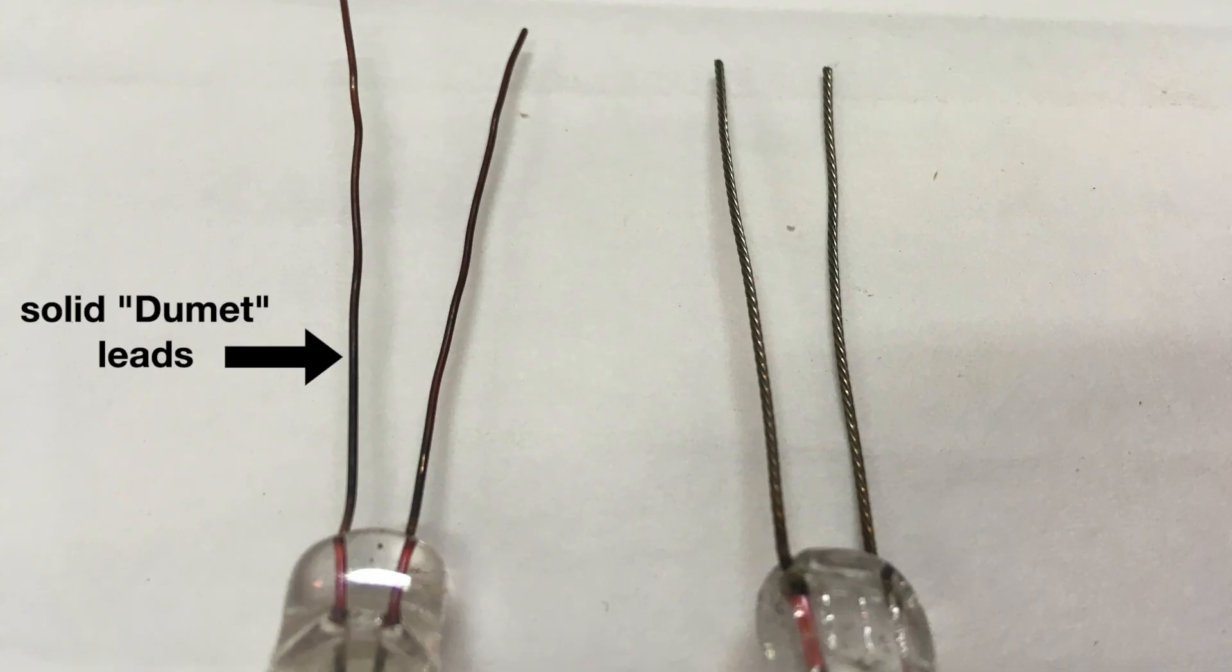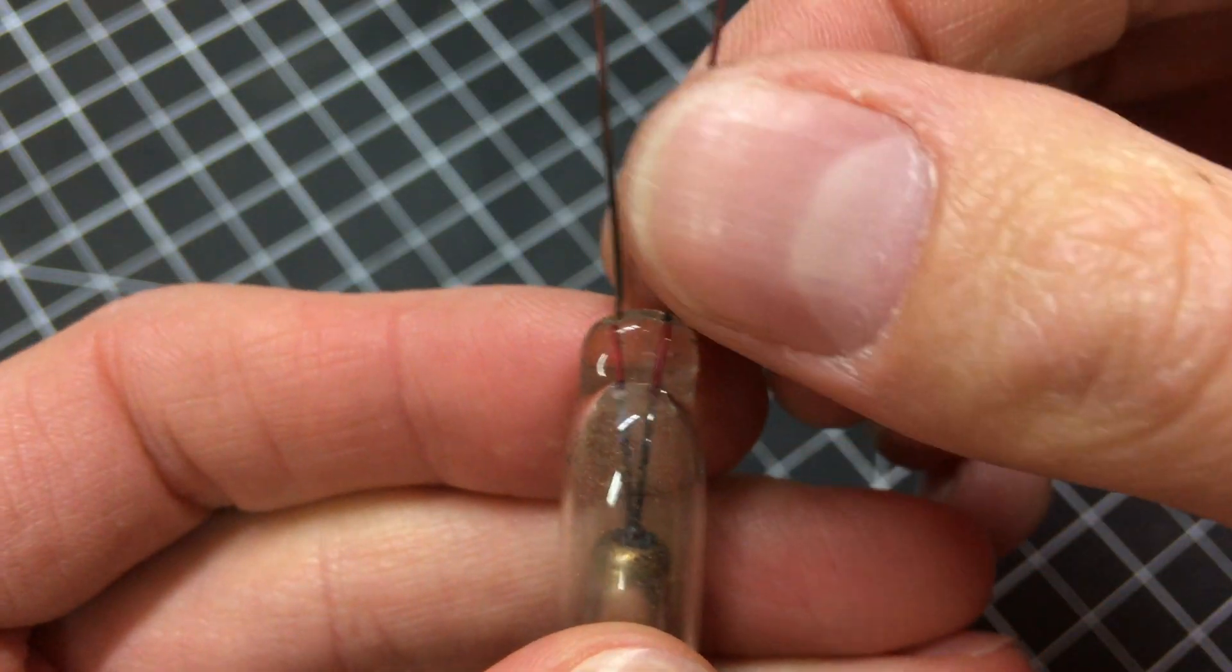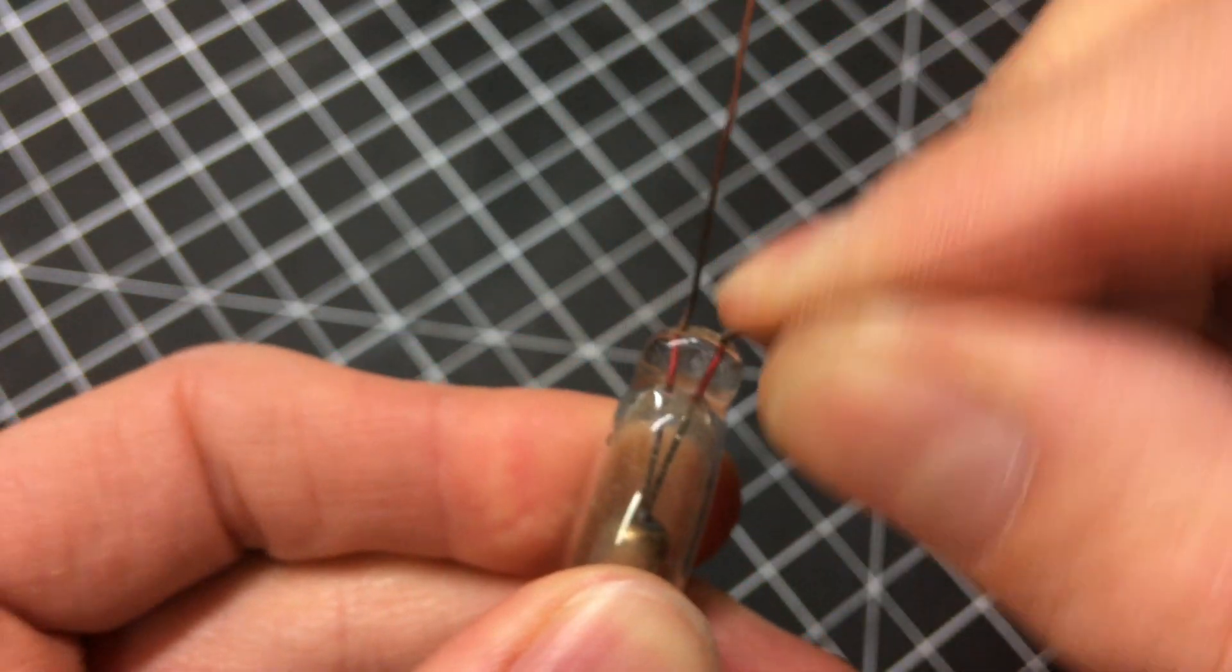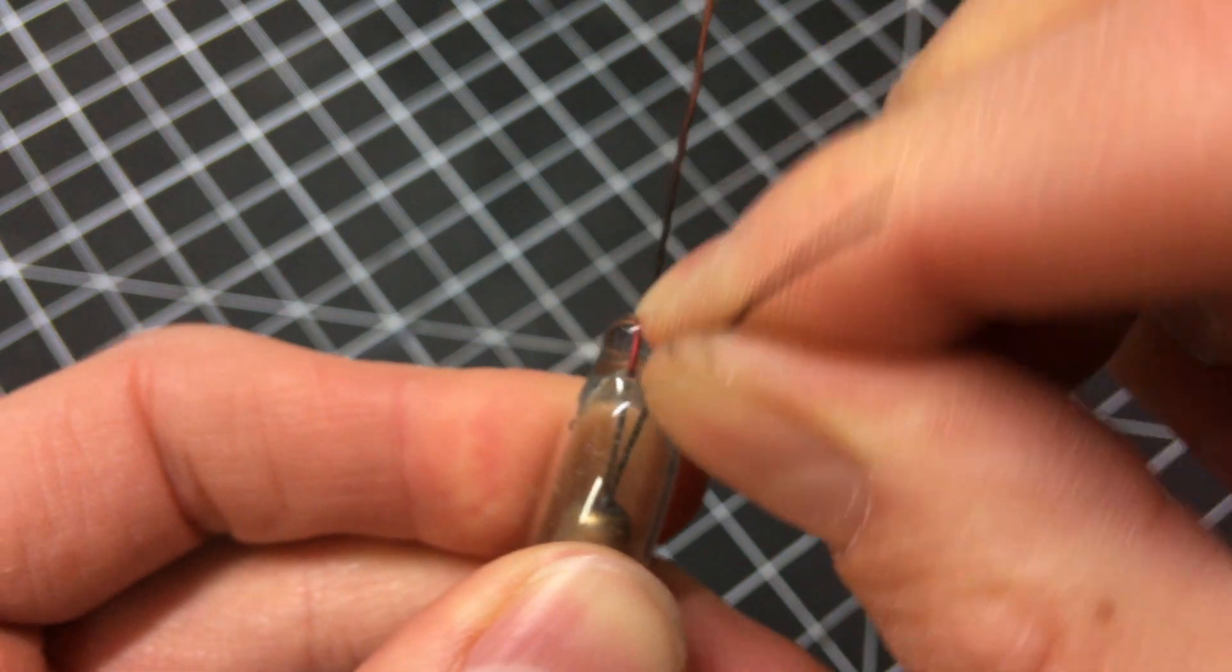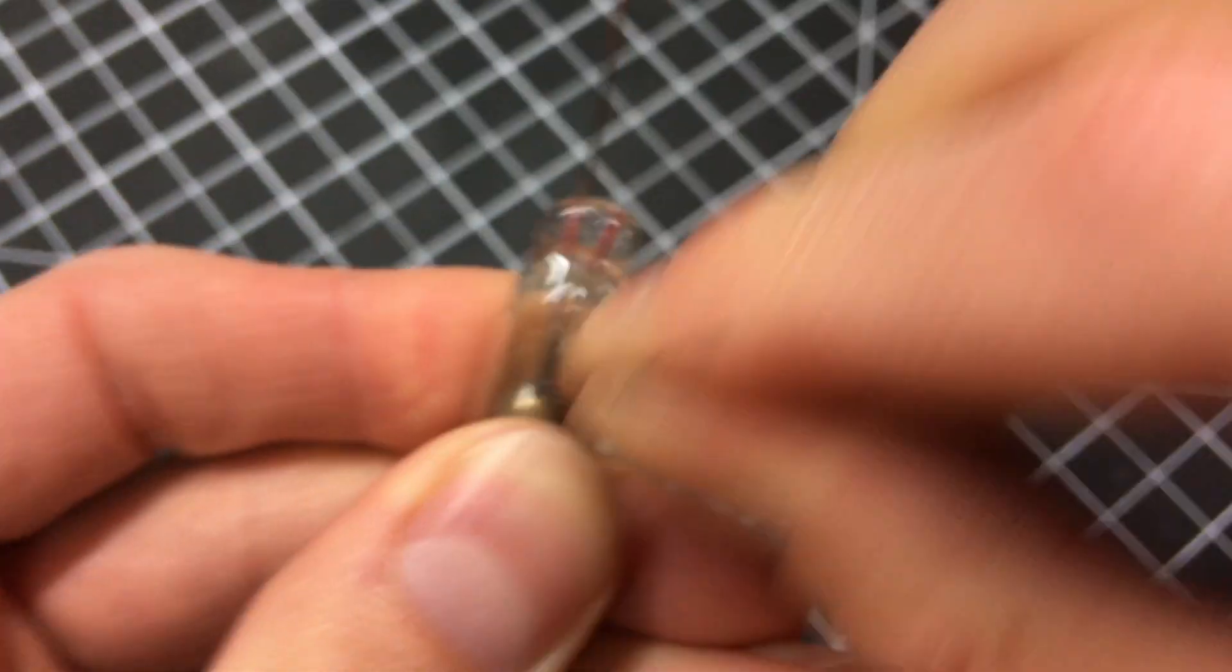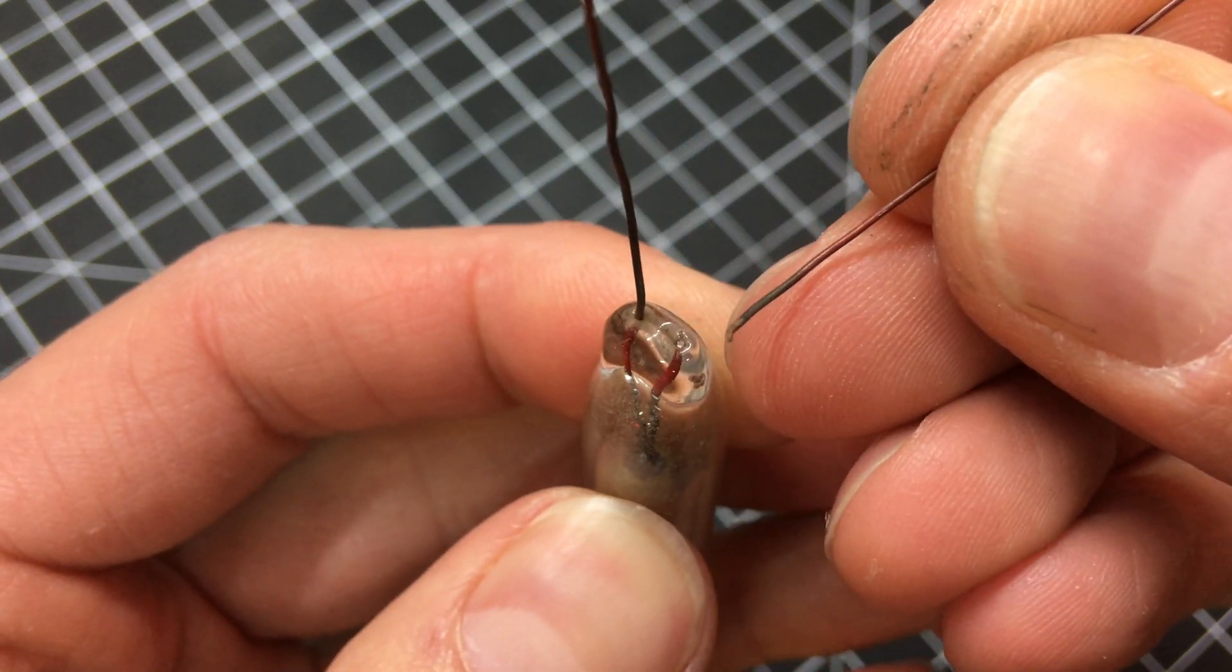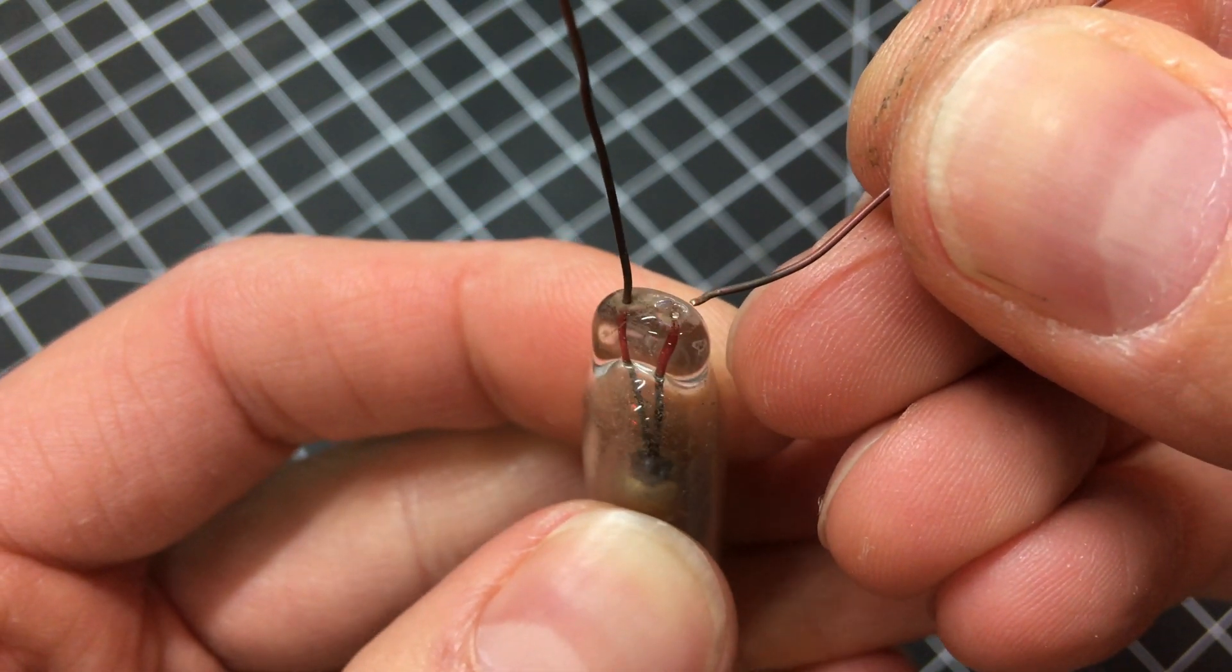Electrodes with solid leads, called dumet leads in the neon industry, are quite prone to fatigue, as shown here. Dumet leads have generally fallen out of favor, but many older tubes have them.